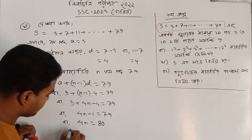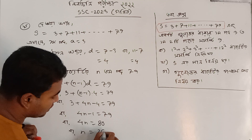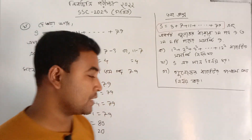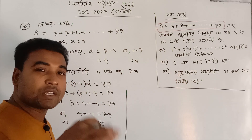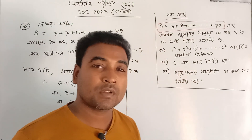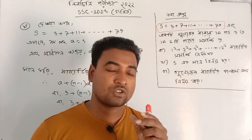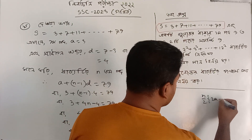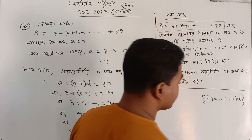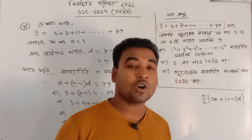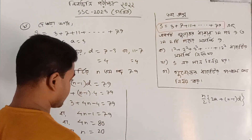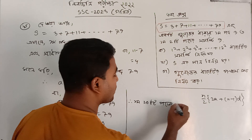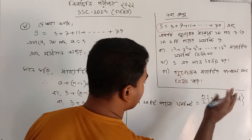This is the formula: n by 2 into 2a plus n minus 1 into d. This is the first part of n single part of the series. When we write into the first part of n single part of the series, the first thing is the first part of n single part.